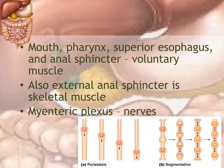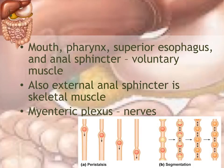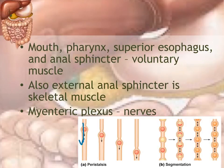The majority of the digestive tract is under involuntary control by smooth muscles, but areas like the mouth, pharynx, and upper one-third of the esophagus are under voluntary control via skeletal muscles. The external anal sphincter is also under voluntary control. All of this is controlled by the myenteric plexus, which supplies nerves to the muscularis layer. Peristalsis is the inner circular layer squeezing food forward, while segmentation is the intestinal wall contracting and shortening to mix food.